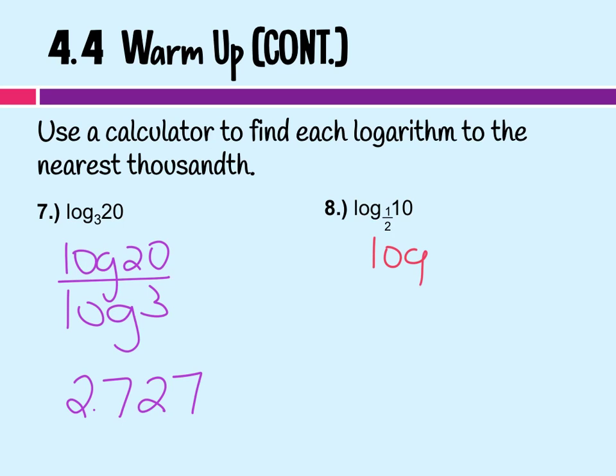And then log base 10 over log of 10, log 1/5. So I can write that in the calculator as 1/5, or I could write it as 0.5. It's the same thing. And I get negative 3.3219, which rounds to 3.322. Questions on any of the warm-up? We're good?